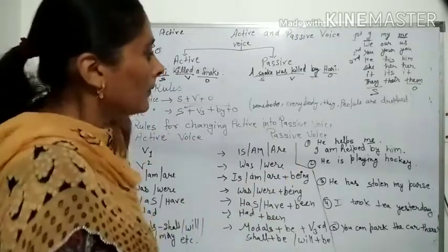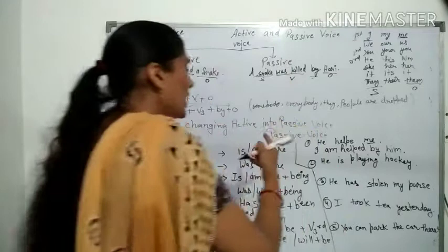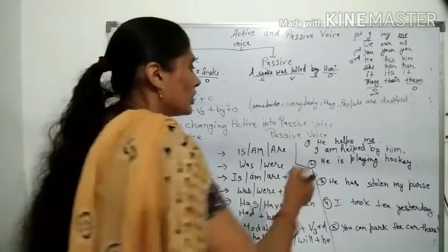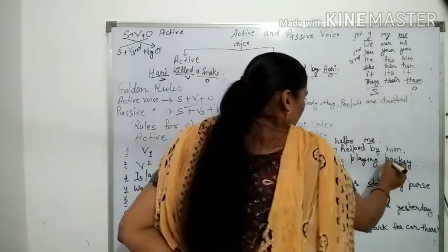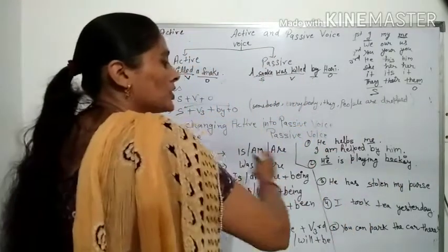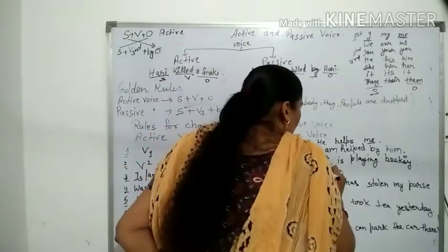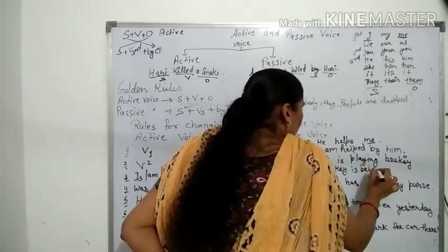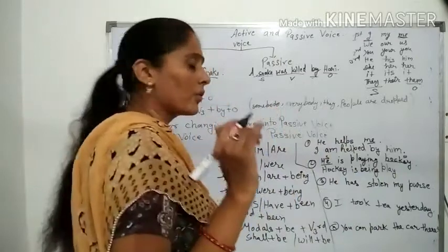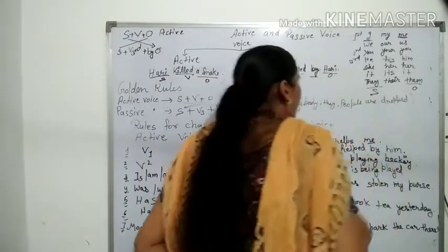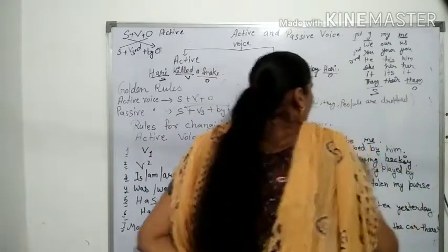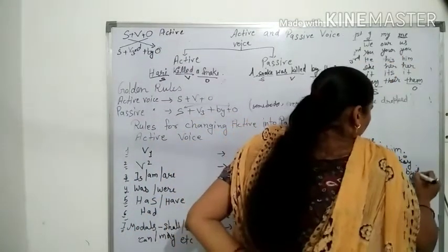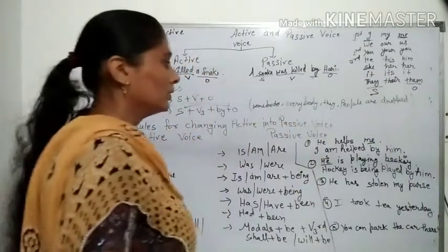Example: He is playing hockey। यहाँ 'is/am/are' को 'is/am/are + being' में change किया जाता है। Hockey हमारा object है, he हमारा subject है। तो hockey subject बन जाएगा: Hockey is being played by him। He subject का object 'him' बन जाएगा। Passive voice में हमेशा third form लगाई जाती है — being played।